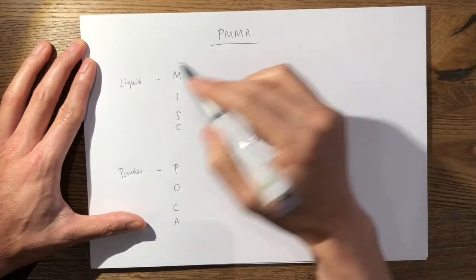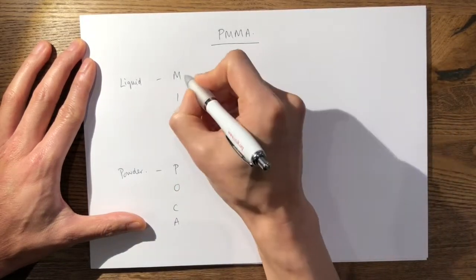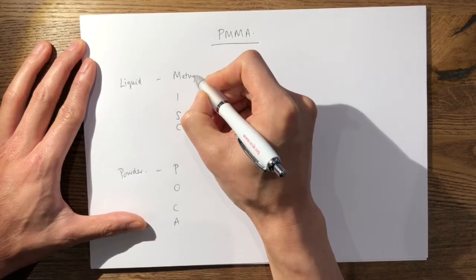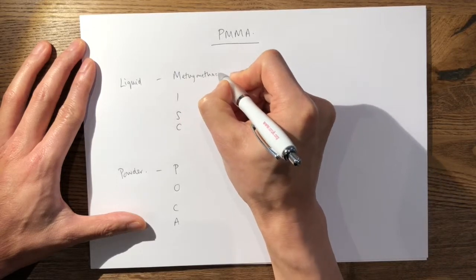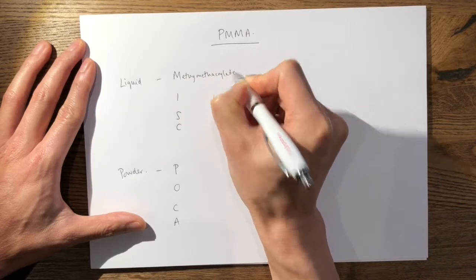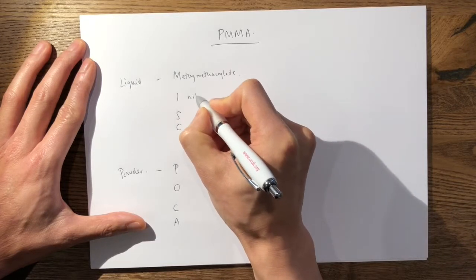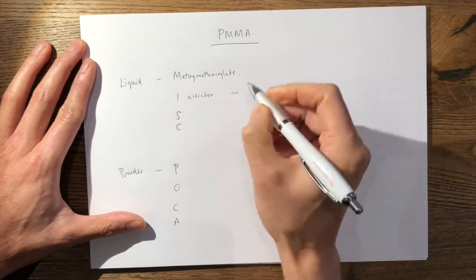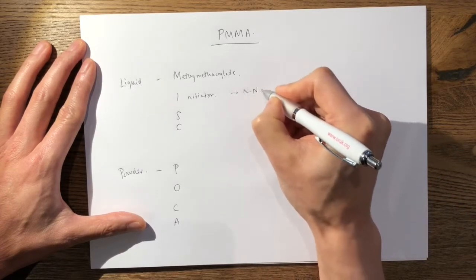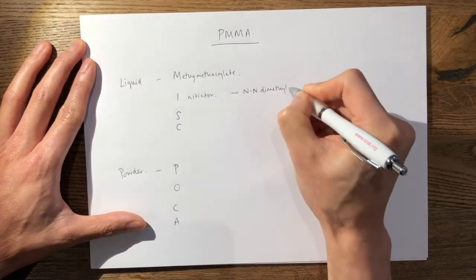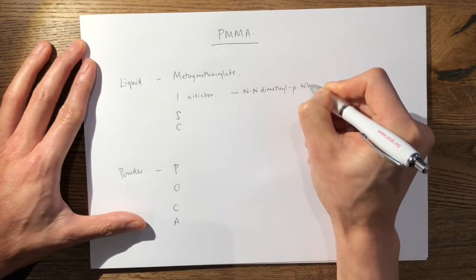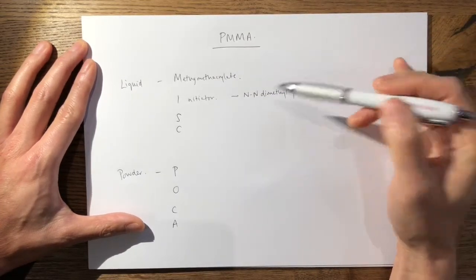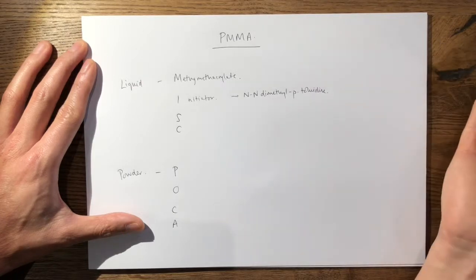First of all, the liquid: the M is a monomer, so it's formed of a methyl methacrylate monomer. The I is an initiator, which in this case is NN dimethyl P toluidine. There's no easy way to remember that apart from that it's used in dynamite TNT.